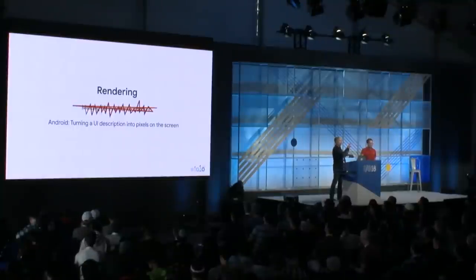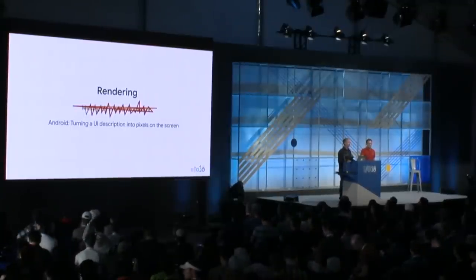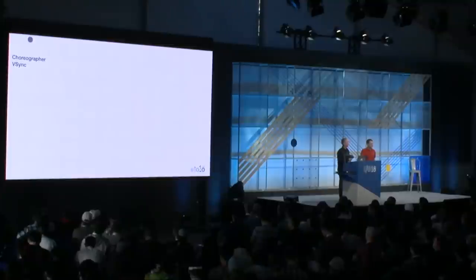There's this word 'rendering.' What do we mean by that normally? Well, it can mean melting fat in order to clarify it — that's not quite what we're going to talk about. Instead, we're talking about the process of turning all that stuff — buttons, checkboxes, everything on the screen — into pixels that the user can look at. There's a lot of details we're glossing over today because we only have 40 minutes.